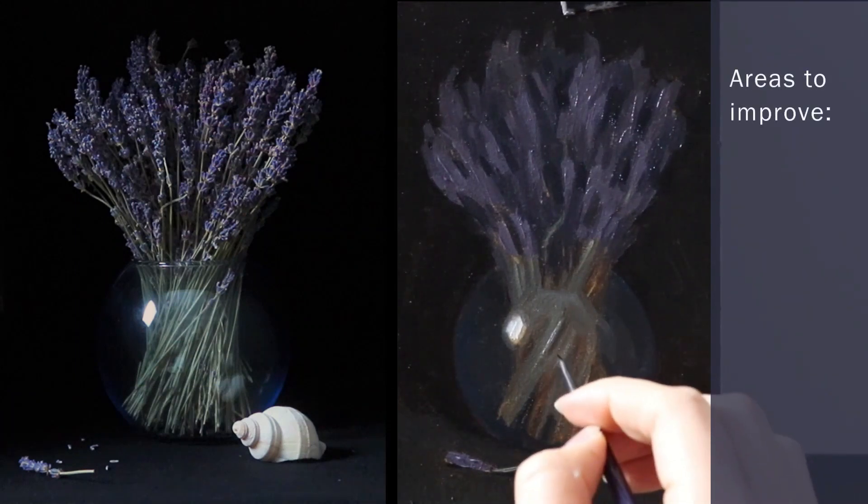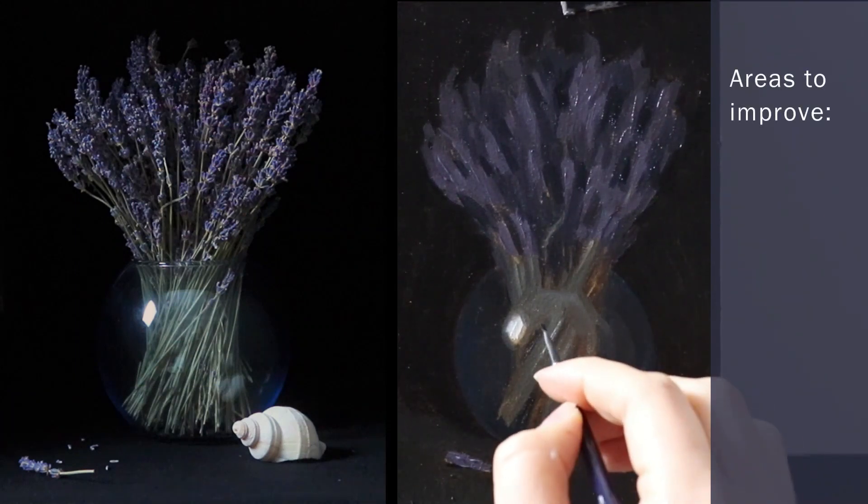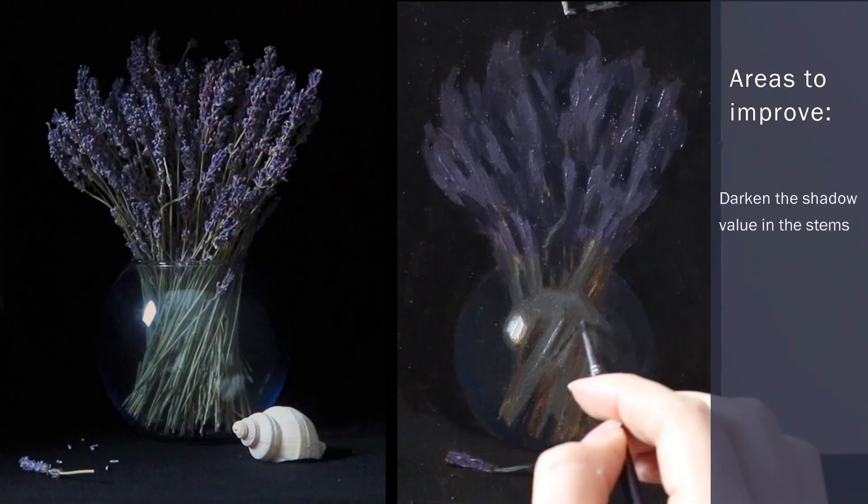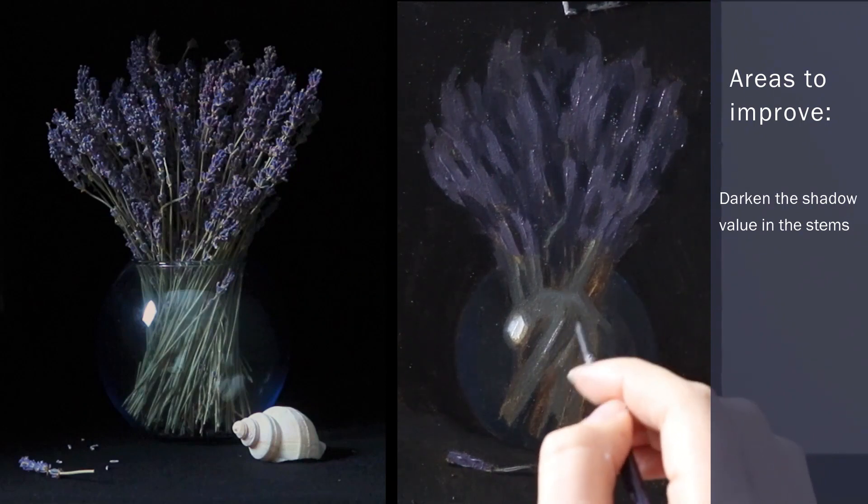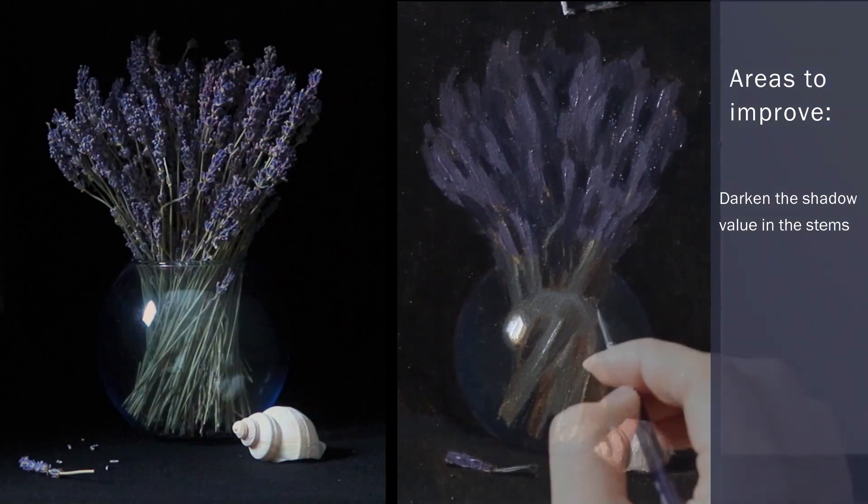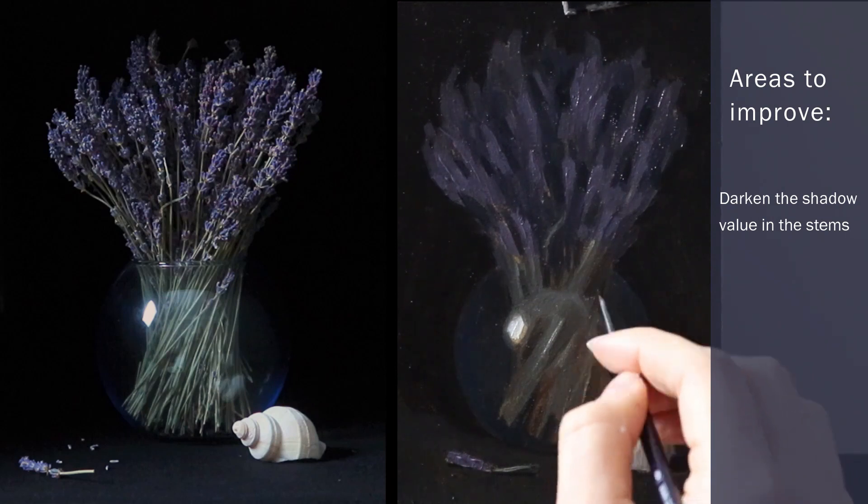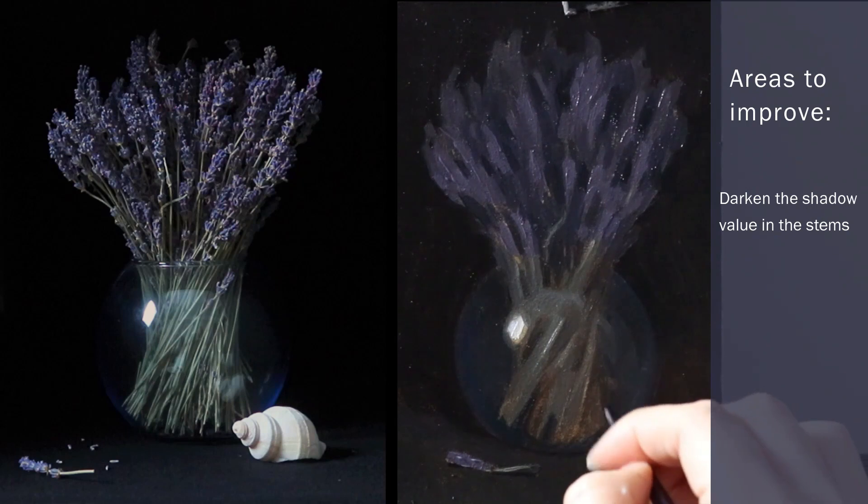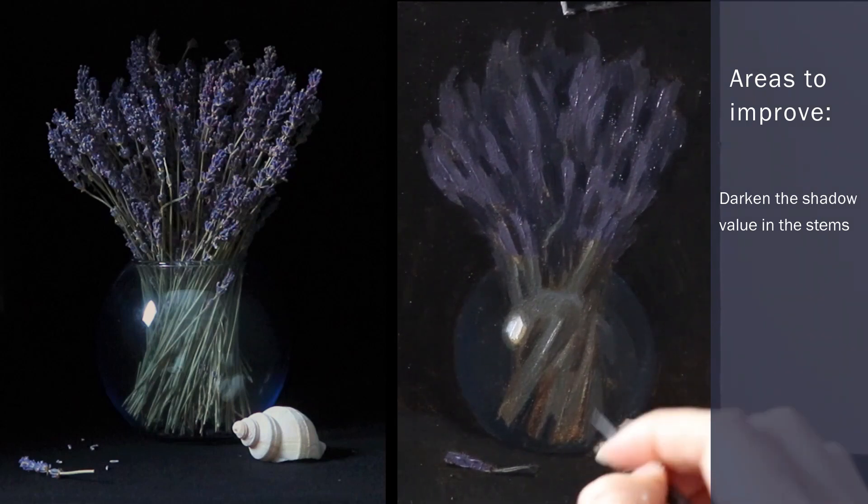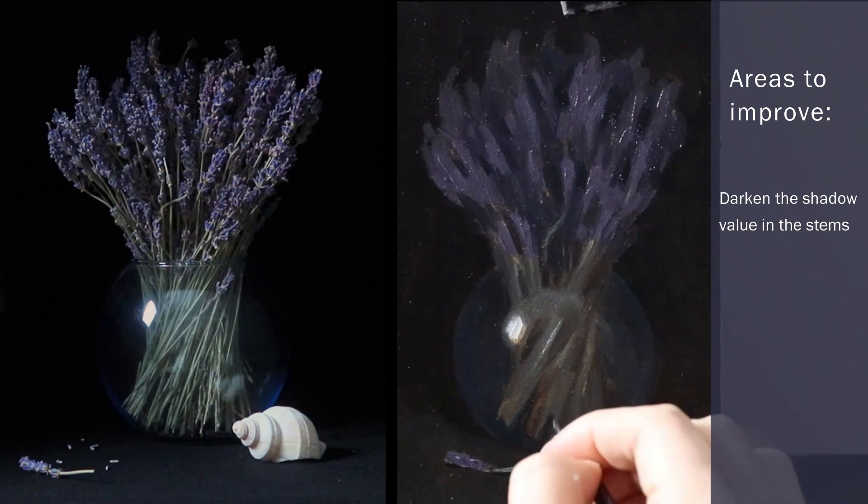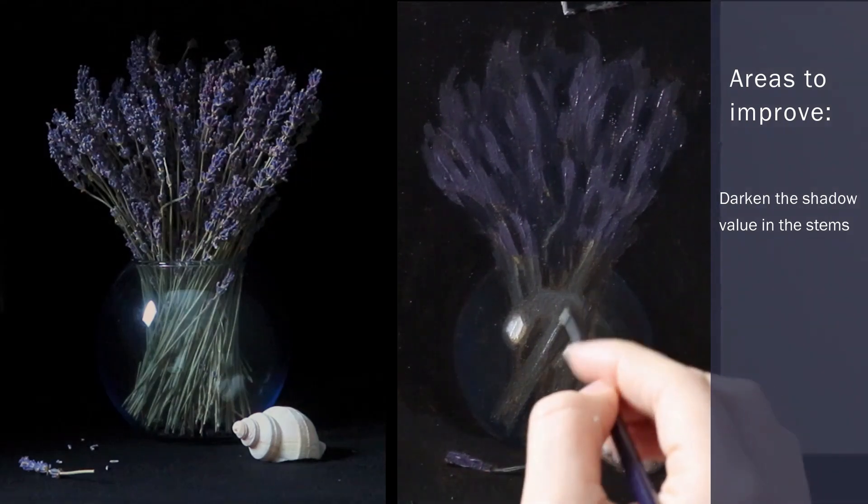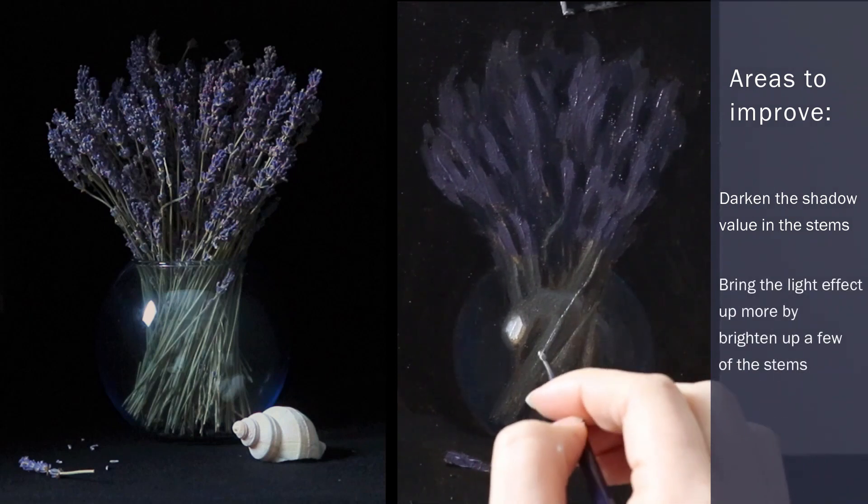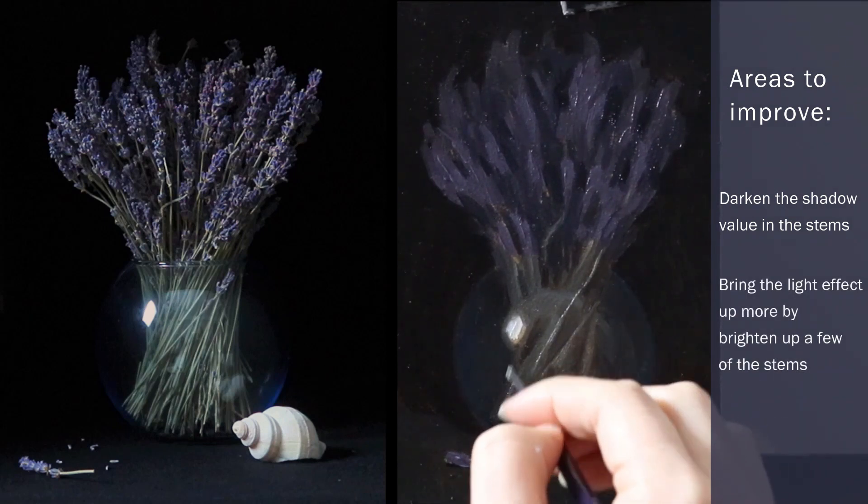The first area I want to correct and just add a bit more information to are the stems. The first thing I want to change is the shadow value of them. It needs to be a bit darker and I'm also going to find more specifically the shapes of them. This is going to help the visual impression a lot and will also give me a more truthful study to relate to. To up the light effect in the study even more I'm also going in the opposite direction in the stems and I paint a few of the brightest notes even brighter.